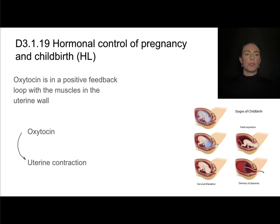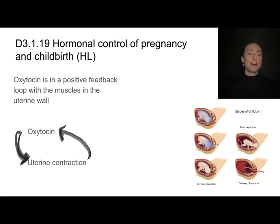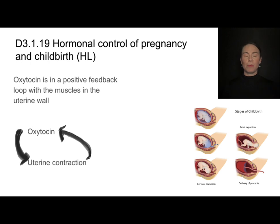Oxytocin causes the uterus to contract, which squeezes the baby so its head pushes up against the cervix — causing even more oxytocin to be produced, which causes more intense and frequent uterine contractions, which pushes the baby against the cervix again, and so on. This is why oxytocin is in a positive feedback loop with the muscles in the uterine wall — one of the few examples of positive feedback loops in physiology. This continues until the baby exits and the placenta is expelled.